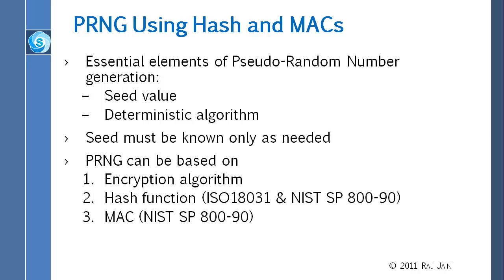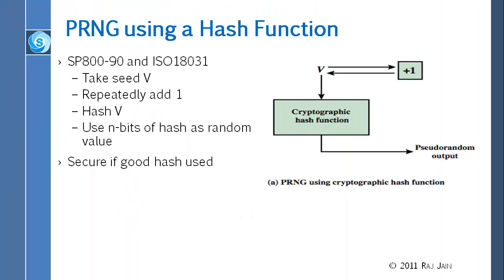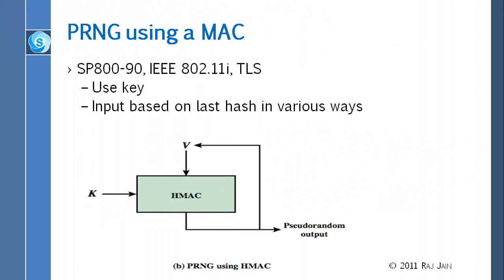The seed must be known only to those who need it. As long as people don't know the seed, they can't generate the same random sequence. A PRNG can be based upon the encryption algorithm, the hash function, or the MAC — all of these work similarly. For the hash function, you either feed back the output as input to get a new value, or keep incrementing the input by one. With a MAC, similar possibilities exist — the standard specifies using a cipher-block-chaining kind of approach.